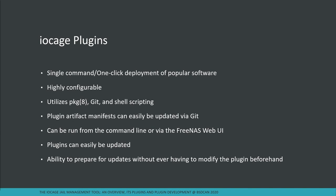IOCAGE plugins are an awesome feature and I think what sets it apart from other management utilities. These are single, one-click deployments of popular software — highly configurable using shell scripting. It uses the pkg utility for grabbing packages from various repositories, either the official FreeBSD one or custom ones. It requires Git and typically uses POSIX sh scripting. Plugin artifact manifests are updated via Git from a repository, pulled down when you install a plugin. You can install plugins via command line or via the FreeNAS web UI. They can be easily updated, and you can prepare pre- and post-upgrade scripts to handle what happens during updates.